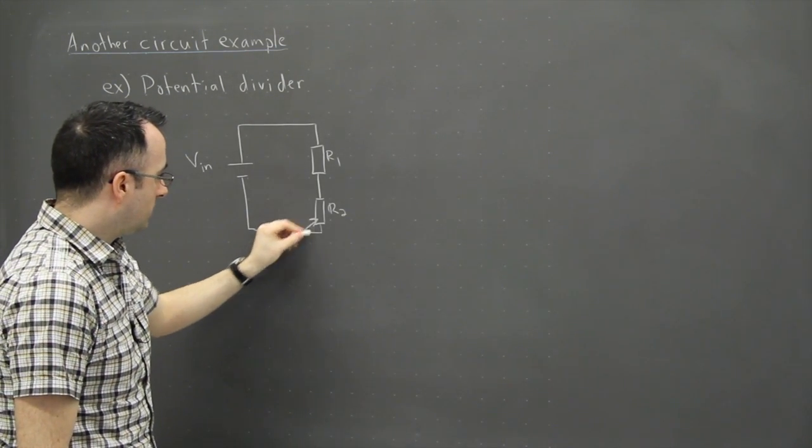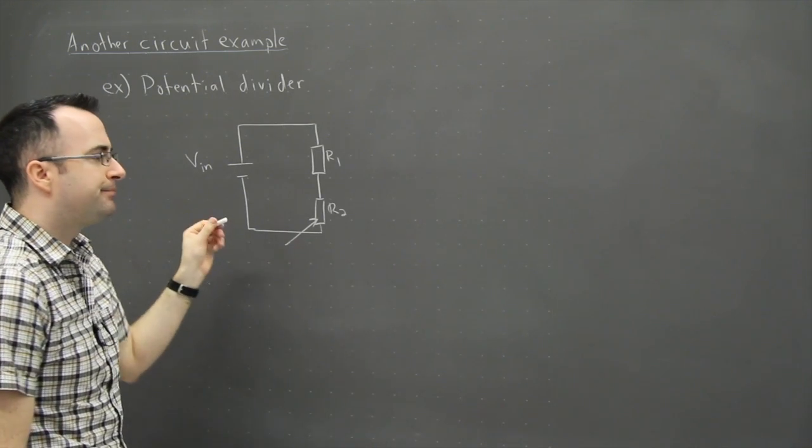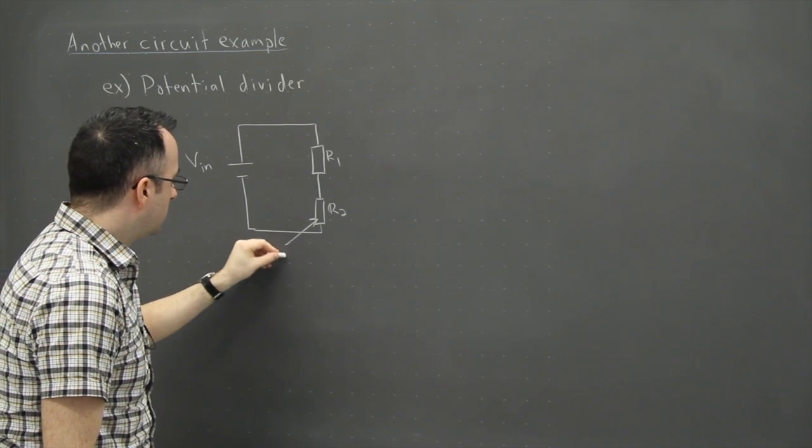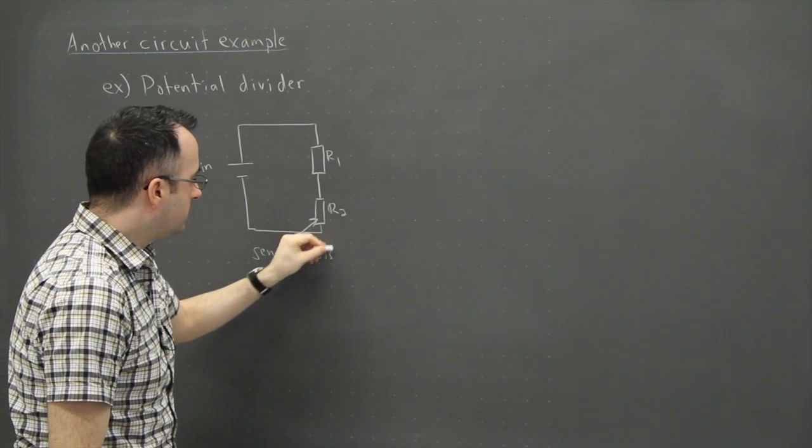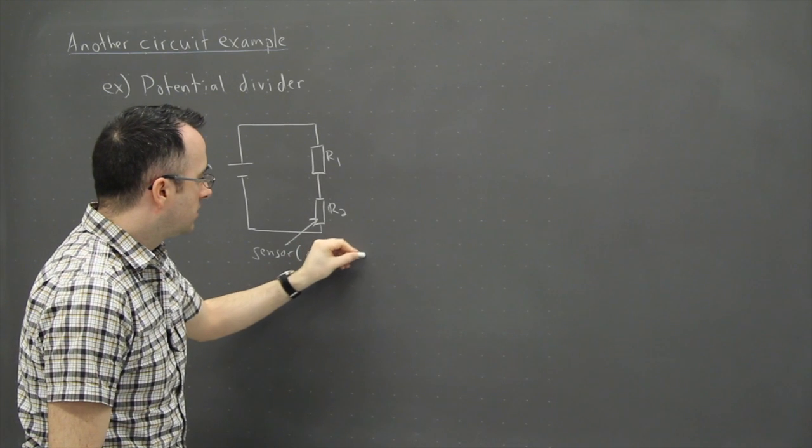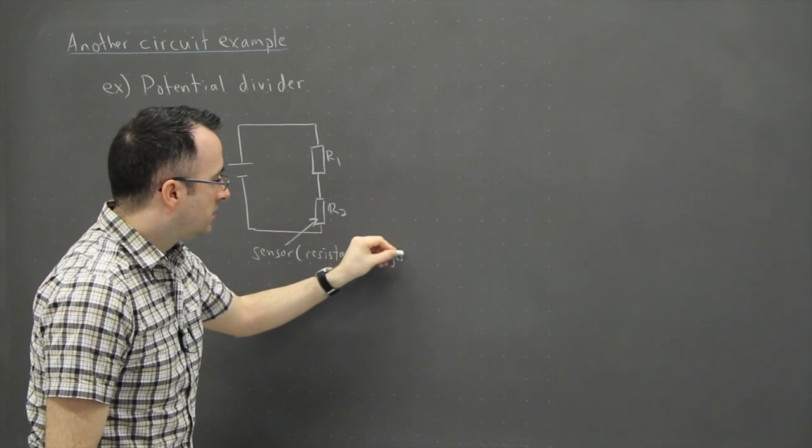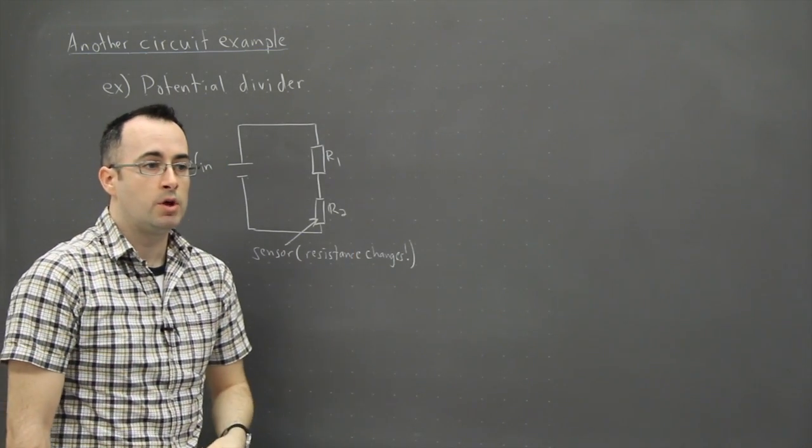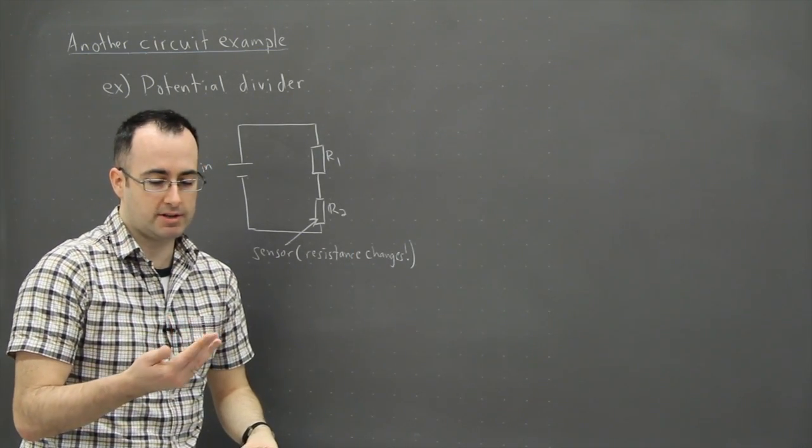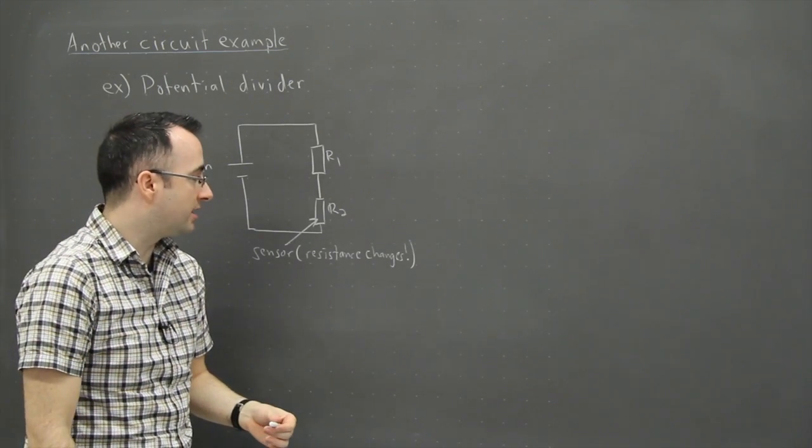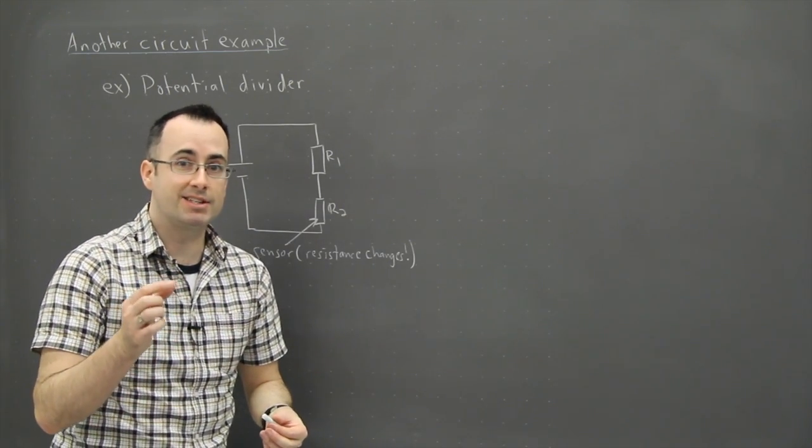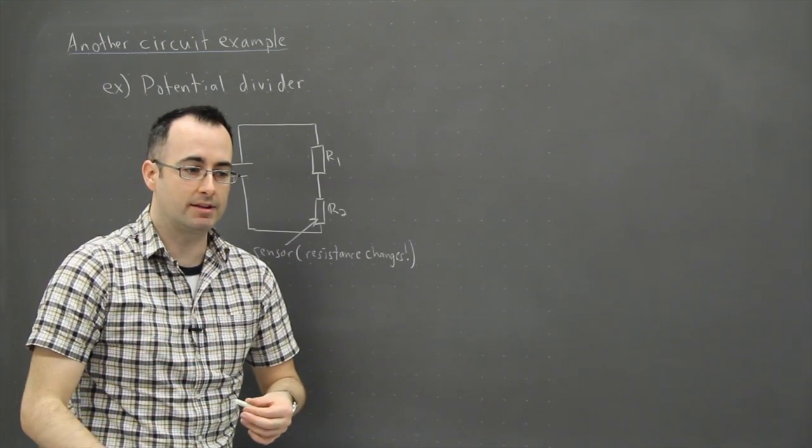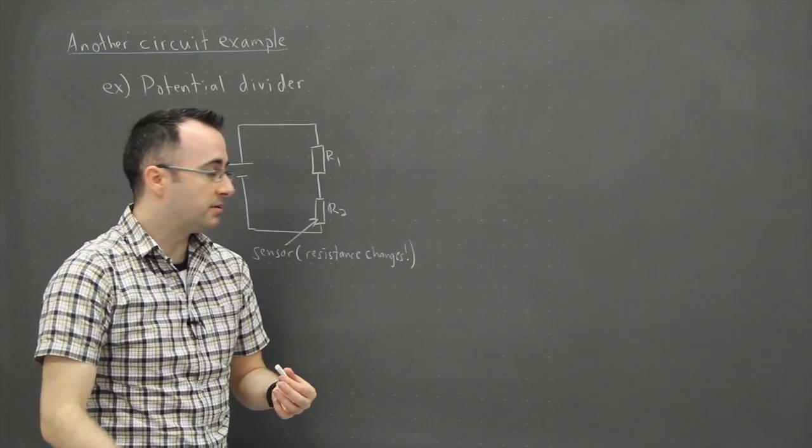Now the idea here is that this one right here would be a, let's say, it's a, we call that a sensor. So in this case, it's something where the resistance changes depending on some situation. So for example, this could be what we call a thermistor, which is a, it's kind of a neat name because it's like a thermal resistor. So that tells you right there. It's a resistor whose resistance changes depending on the temperature. So the hotter it gets, its resistance will be different depending on the temperature.